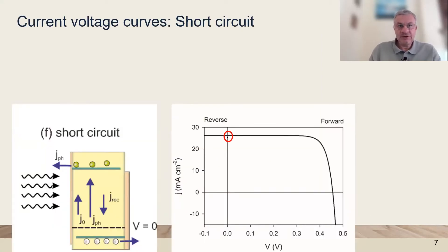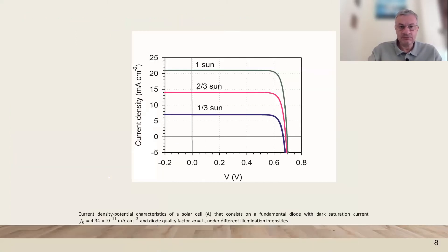Short circuit current is the current at voltage zero so that we are extracting the photo generated carriers. As we increase the light intensity, then the photocurrent is going to increase.